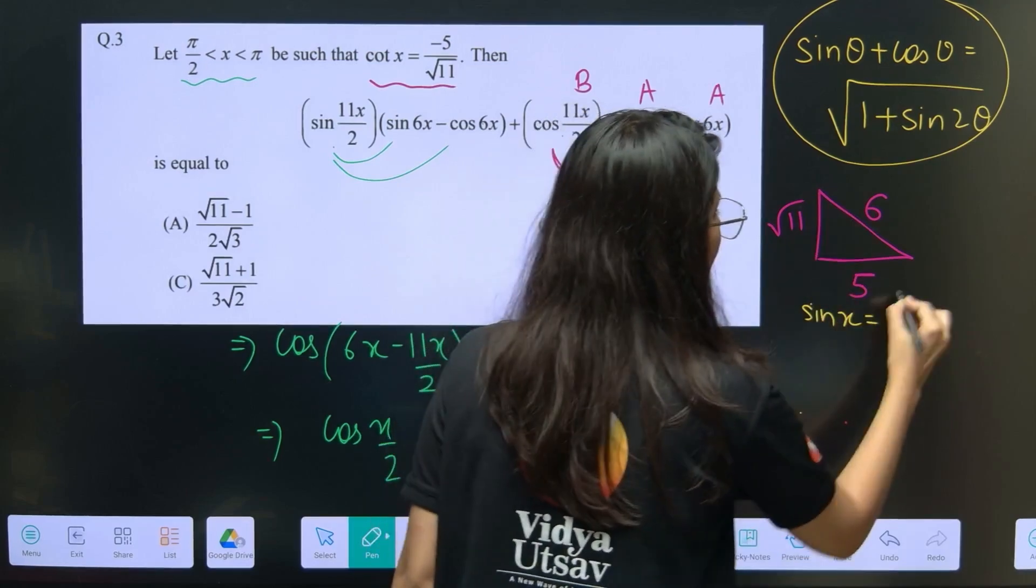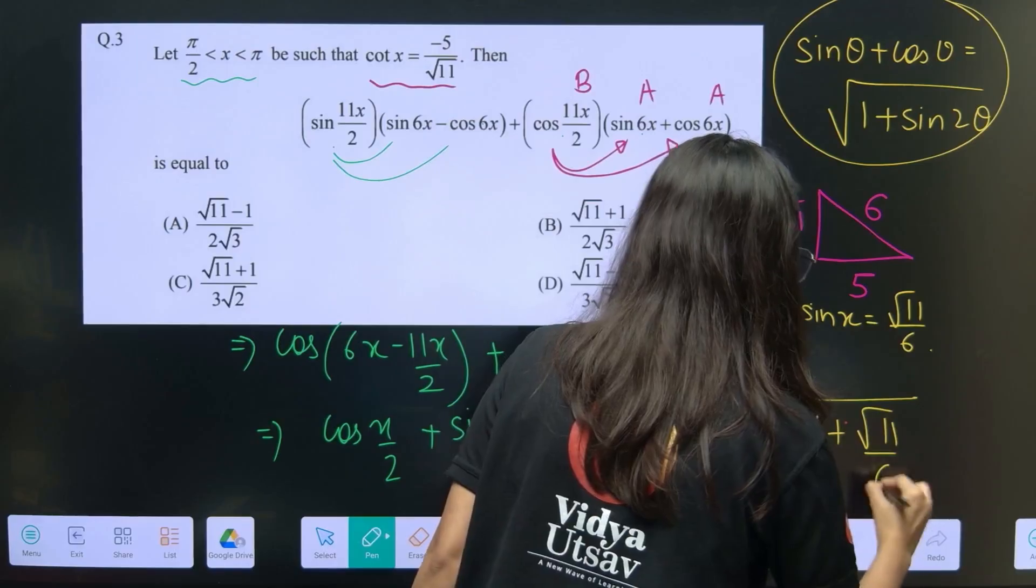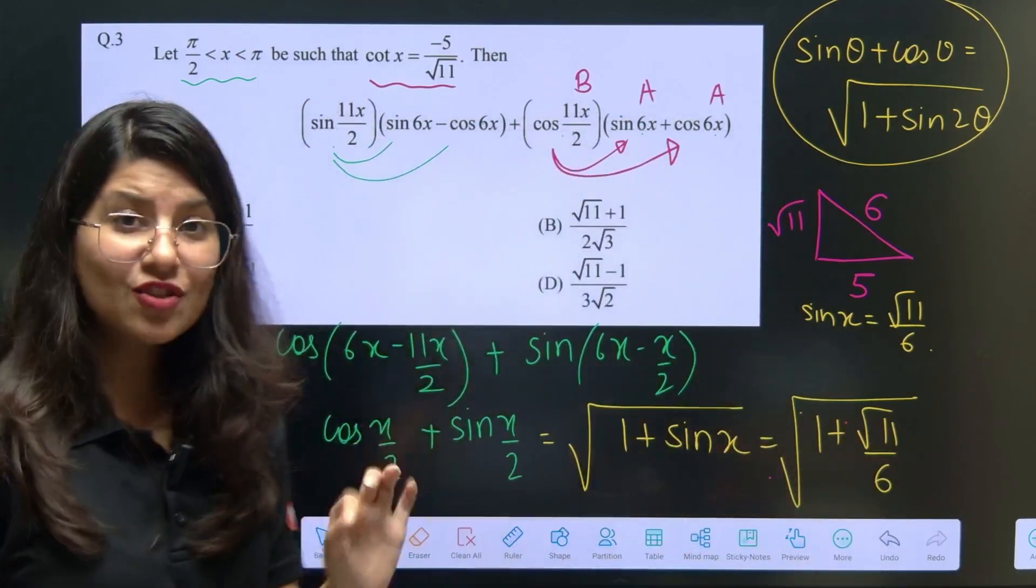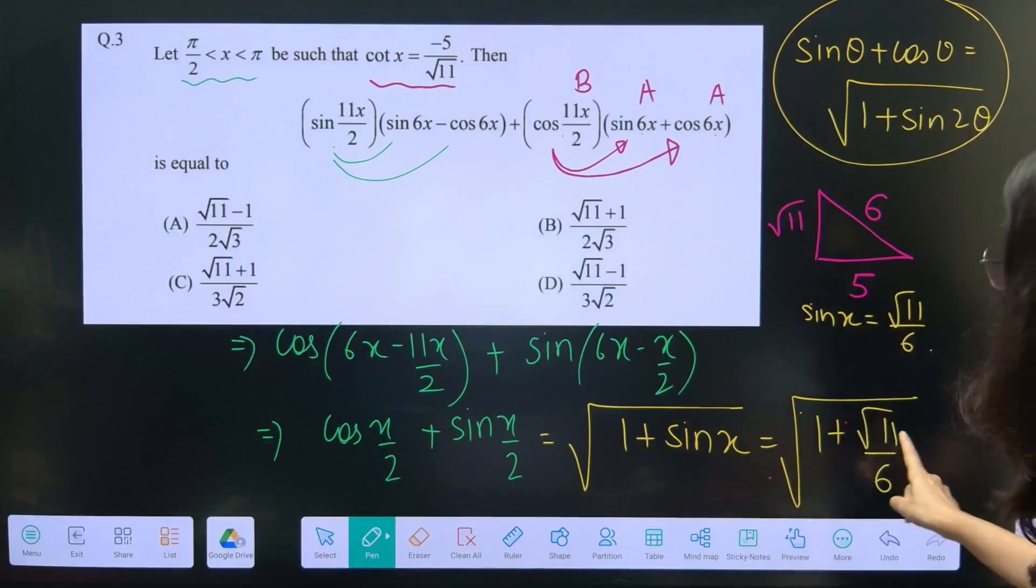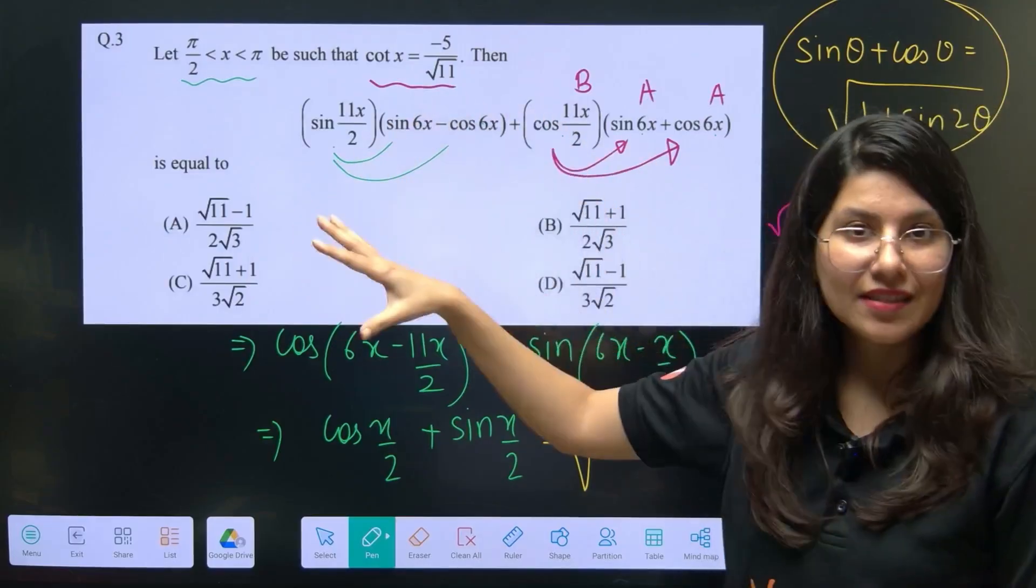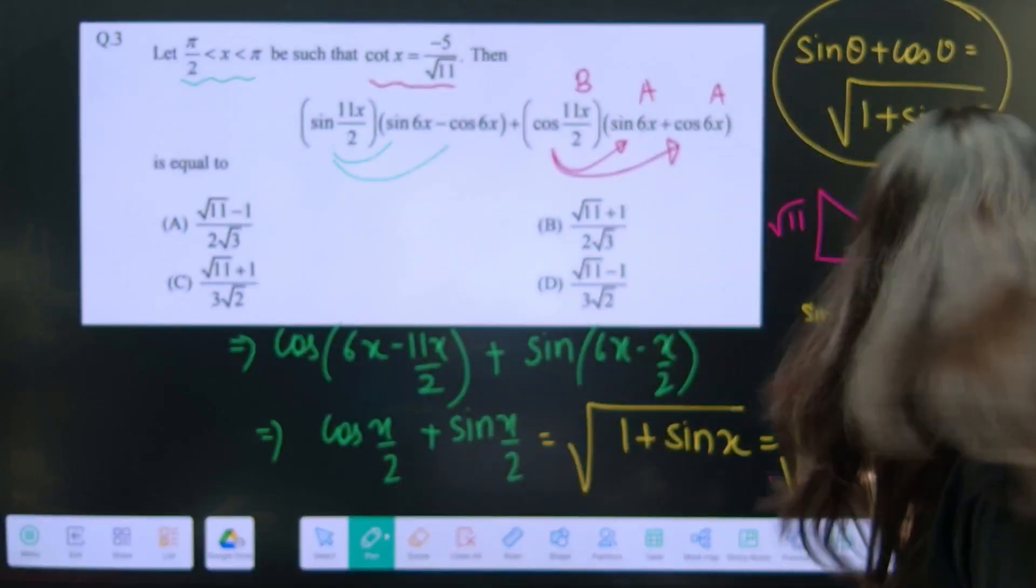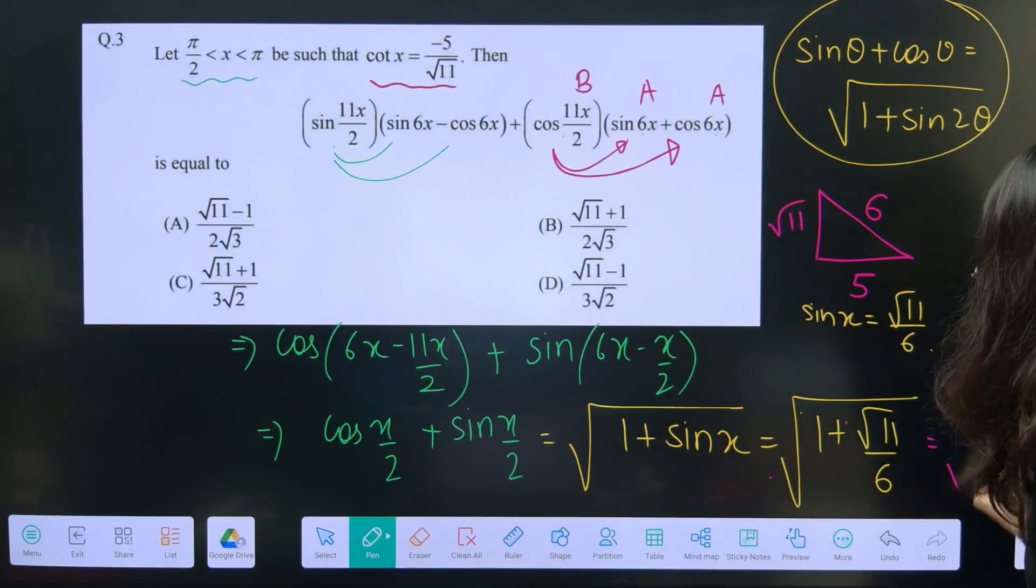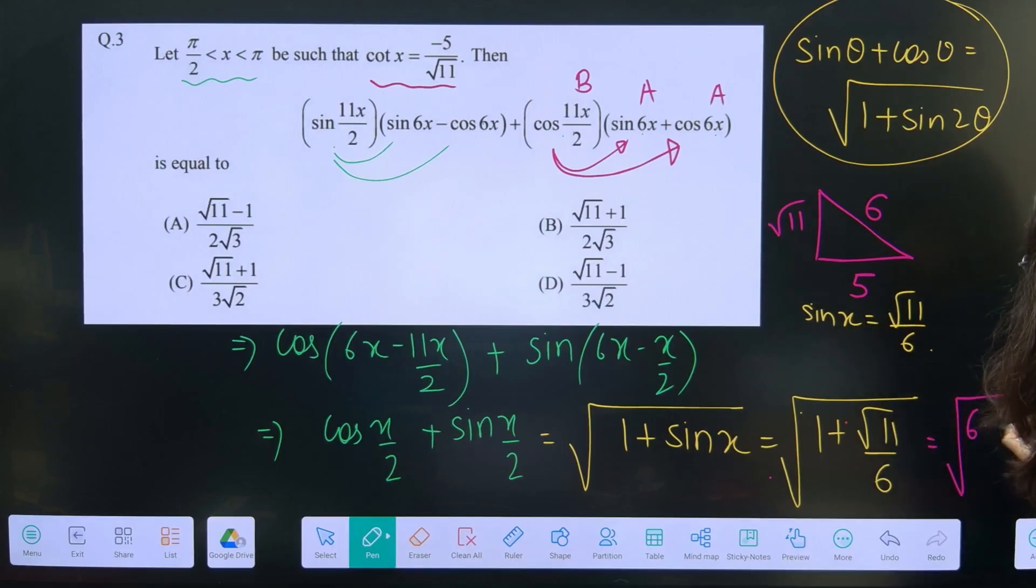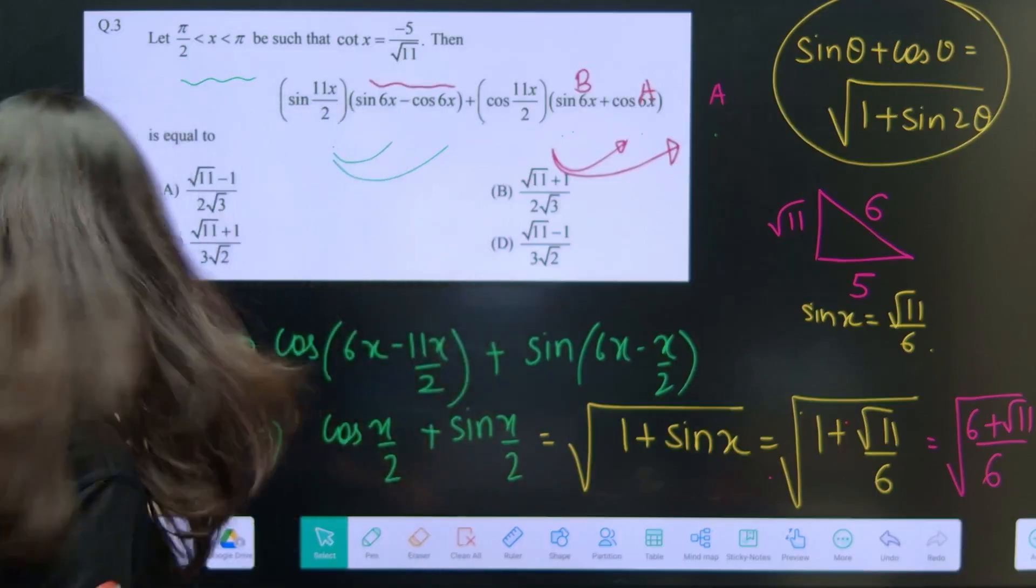11 plus 25, root 36 which is 6. Clear. So now from your triangle, tell me, value of sin x is root 11 by 6. So this is square root of 1 plus root 11 by 6. Now can you see ninja technique will be so useful over here?